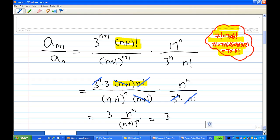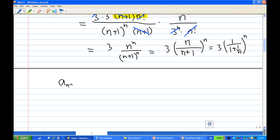So in the end this ratio will be equal to 3 times n power n over n plus 1 power n, which we can write as 3 times 1 over 1 plus 1 over n, all raised to power n. So I find that a n plus 1 over a n is equal to 3 times 1 over 1 plus 1 over n, power n.